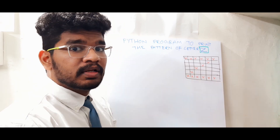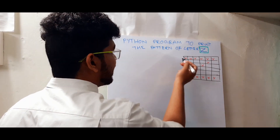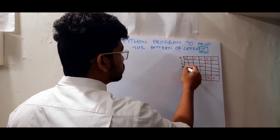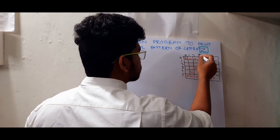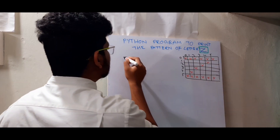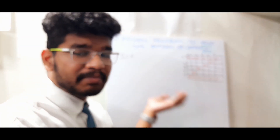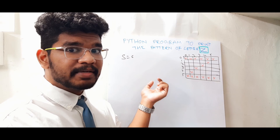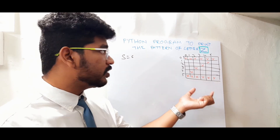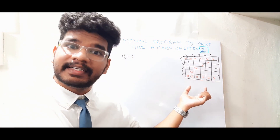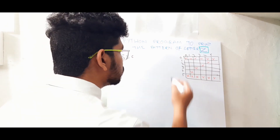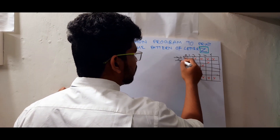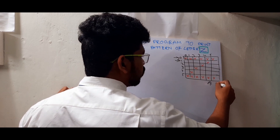This is the pattern of letter Z. I'm going to print it now. Let's assume the size as six — indices zero, one, two, three, four, five. In the example I'm considering size as six, but in a moment I'll go into my Python IDE where I'll take the size from the user, and based on that size the letter will vary. As you know, these are called rows and these are called columns.